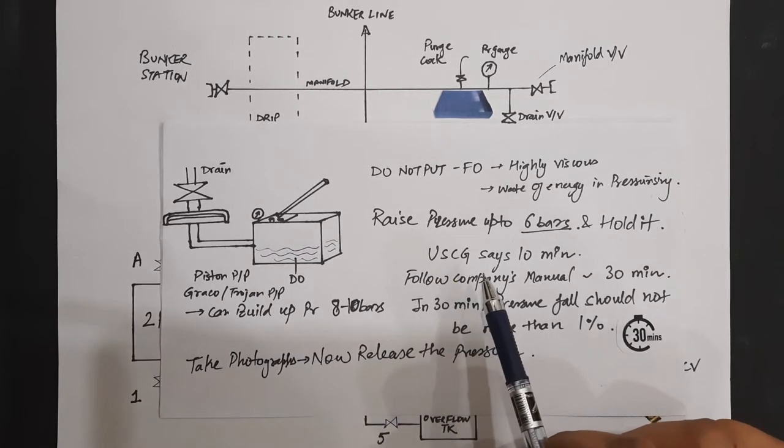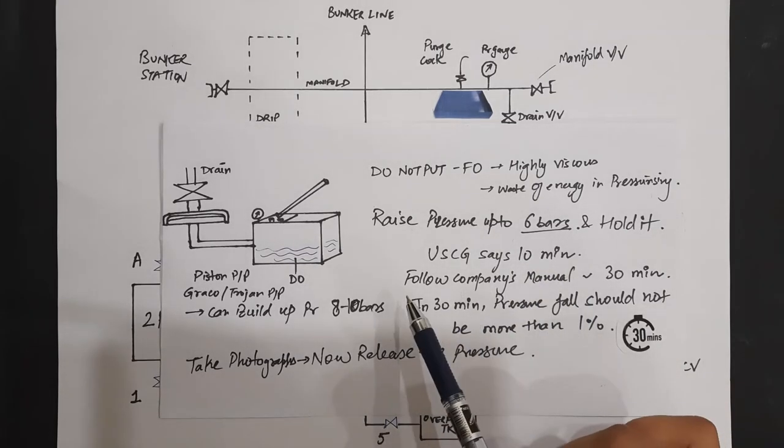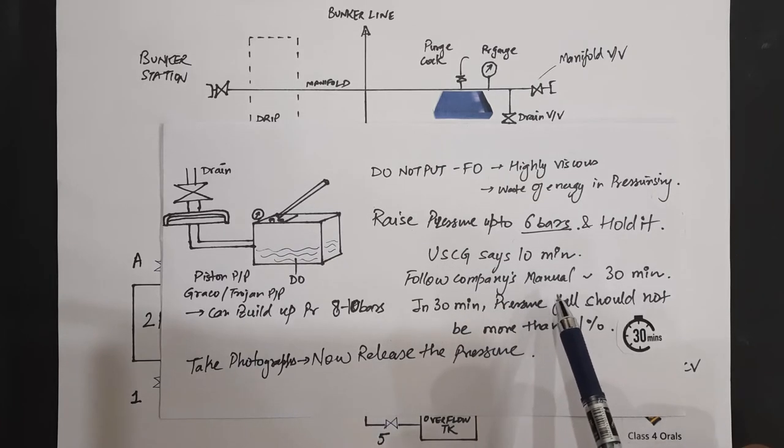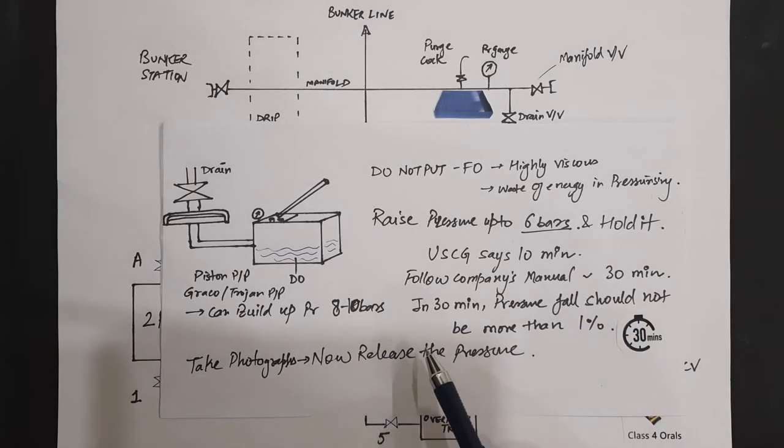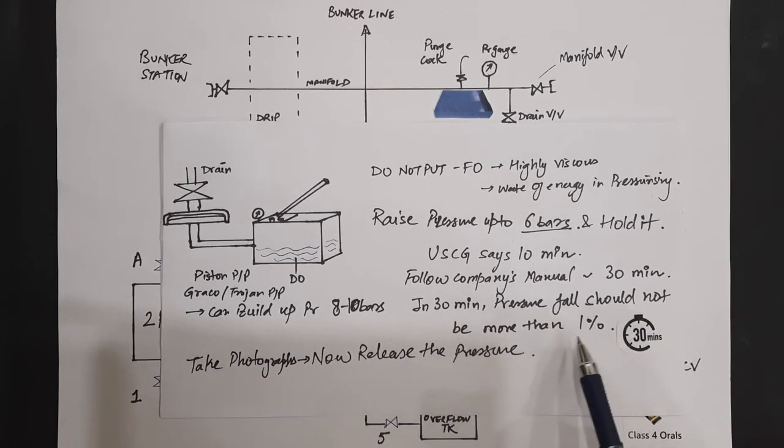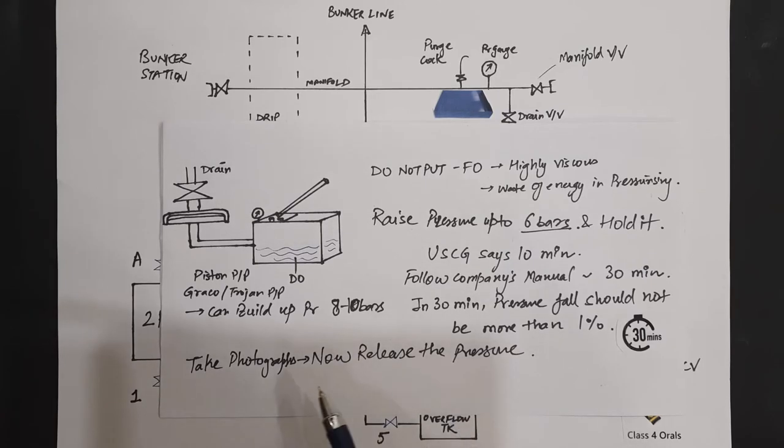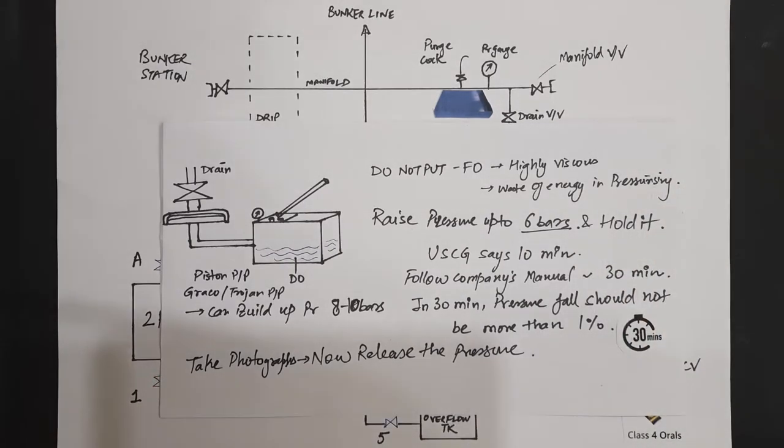Now, as per the USCG, it says it should be held for 10 minutes. But always follow the company's manual because it is more stringent. Suppose the company manual says 30 minutes. Then as per the thumb rule, in 30 minutes, the pressure should not fall more than 1%. And after that, after 30 minutes are over, take the photographs of the test being conducted with proper pressure gauge in the photograph. And now we are going to release the pressure.